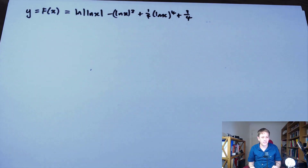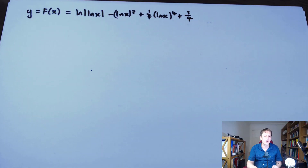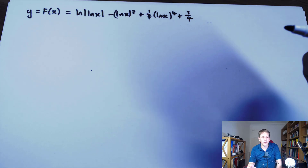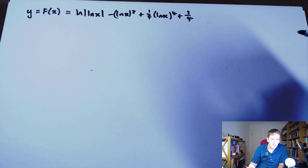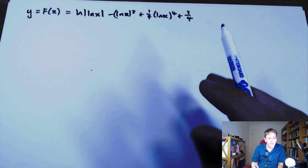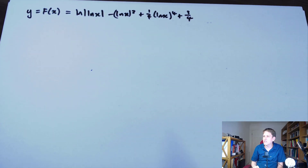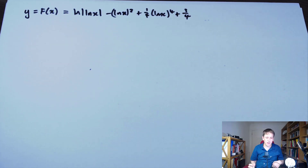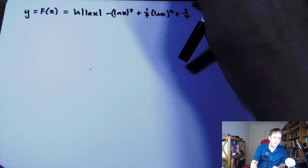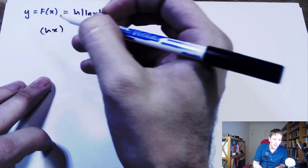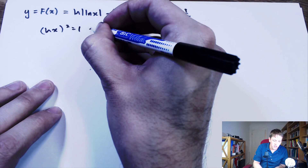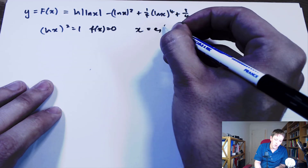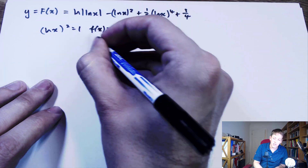Since small f(x) is essentially a derivative for capital F(x) — standard notation — the statement that f(x) = 0 when log²x = 1 tells us that the derivative of F is 0 at x = e and x = 1/e, giving stationary points there. Further, f'(x) = 0 at those points as well, so the second derivative of F is also 0, which doesn't necessarily mean inflection, but it is a possibility.